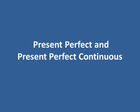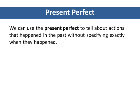Present Perfect and Present Perfect Continuous. We can use the present perfect to talk about at least three kinds of actions. First, we can use the present perfect to talk about actions that happened in the past without specifying exactly when they happened.